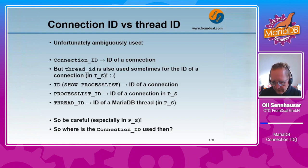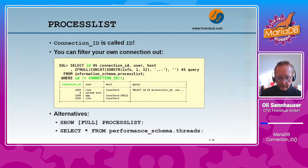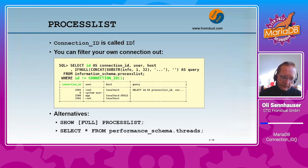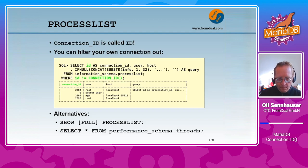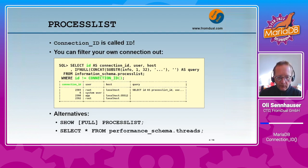So where can we use or see the connection ID? First of all in the process list. The connection ID is called ID there, and if you check the process list you see a column called ID — I have renamed it in this query to connection ID. You can easily filter out the row which is your personal connection and see all other connections with this SELECT on information_schema.PROCESSLIST.